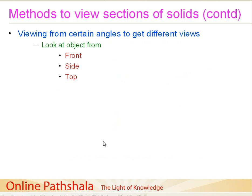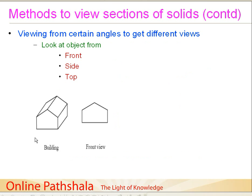Basically, what we do is look at an object from the front side, then from the side, and from the top. Let's say we have a building as an example. How would the building look when I see it exactly from the front? Standing precisely in front of it, I can just see this front portion. This is the front view of this building.